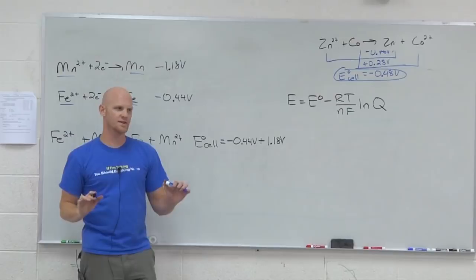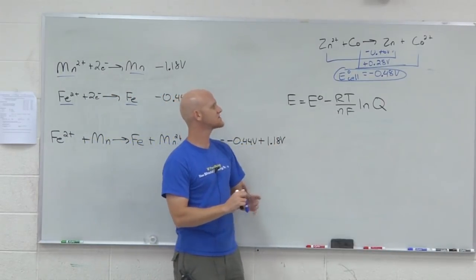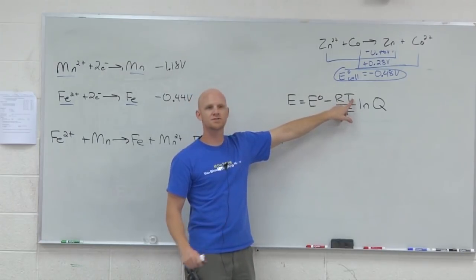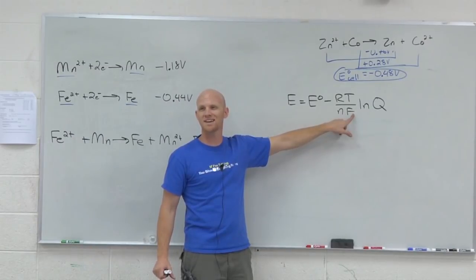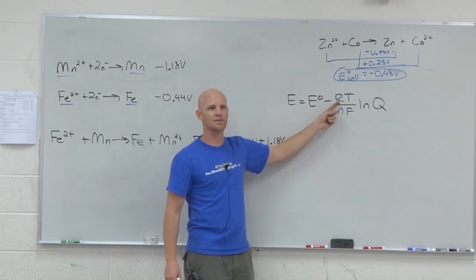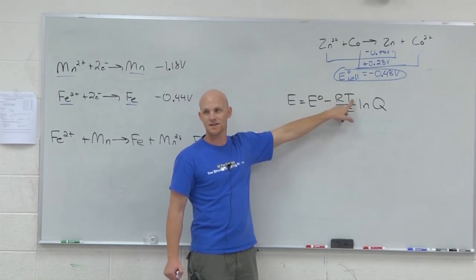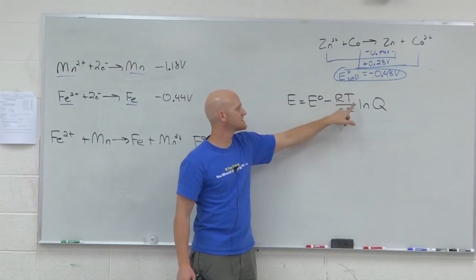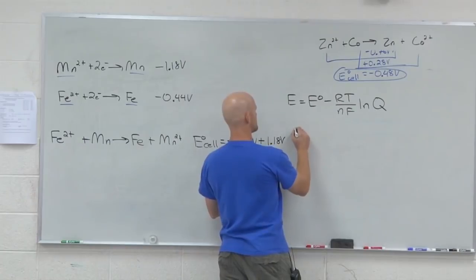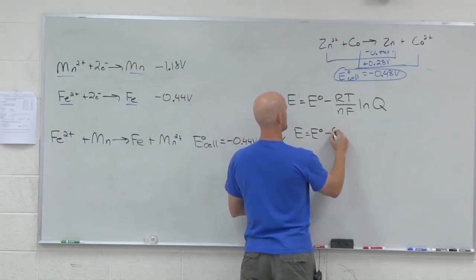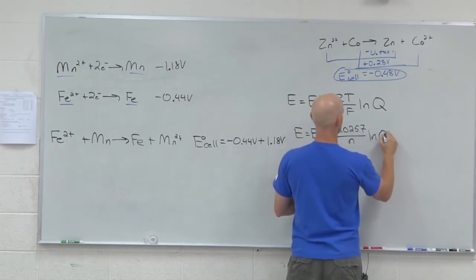We're usually a little nicer to you than this. What you're usually given is not this rough form — we usually assume the temperature is 298 Kelvin. F here is Faraday's constant, which is 96,500. R is the gas constant. If we're always doing this at 25 degrees Celsius, 298 Kelvin, that's a constant temperature. And a constant times a constant divided by a constant is a constant. So sometimes we give this to you as E equals E standard minus 0.0257 over N times the natural log of Q.